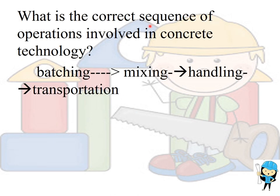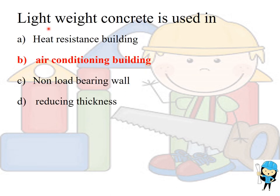The correct sequence of operations involved in concrete technology is: batching, mixing, handling, and transportation. Batching means the weighing of the materials used for construction purposes. Lightweight concrete is used in air conditioning buildings.